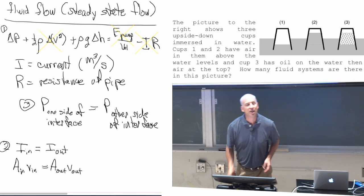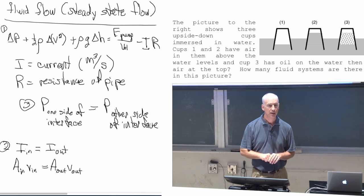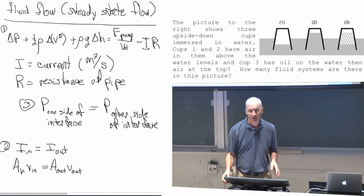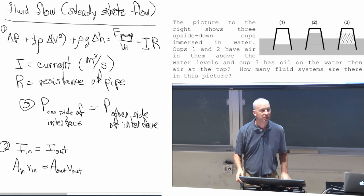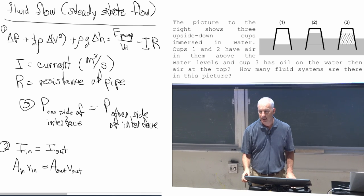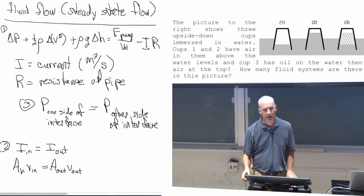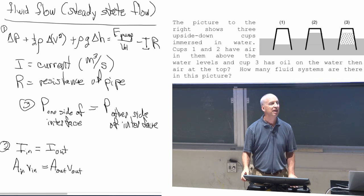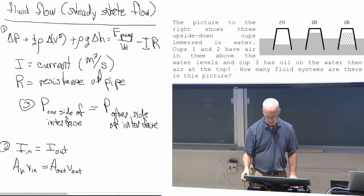Separate fluid systems require a separate equation. So if you really wanted to finish this completely and calculate all the pressures everywhere, you would need six equations. And you would need to match all the pressures at the interfaces in order to straighten all of that out.